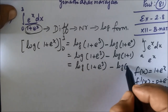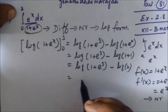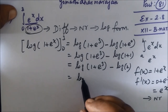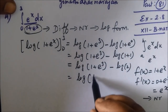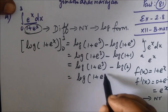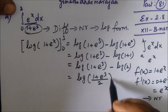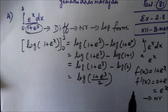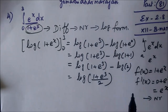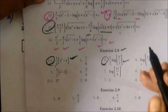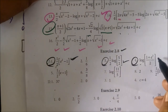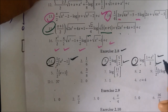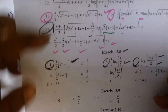This is of the form log m minus log n, which equals log(m/n). So the answer is log((1 plus e^3)/2). Confirming: the answer to question 4 is log((1 plus e^3)/2), which is correct.